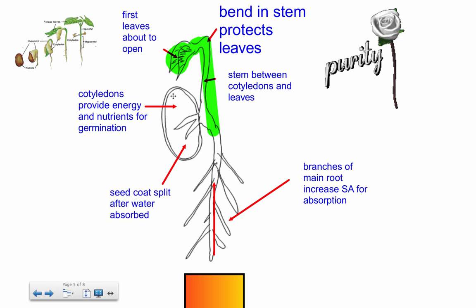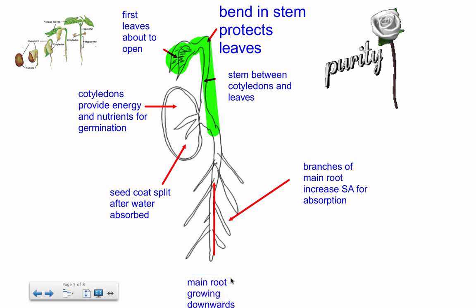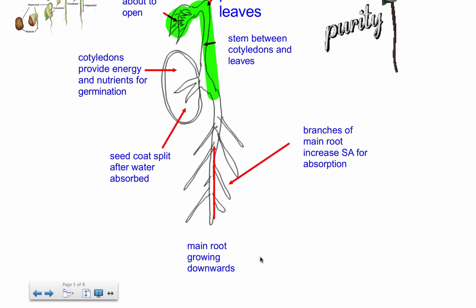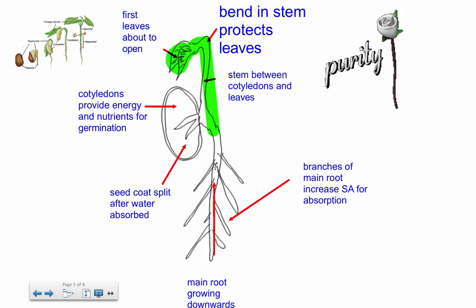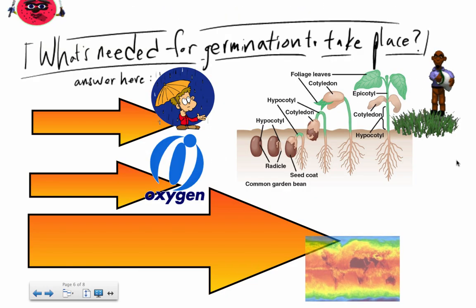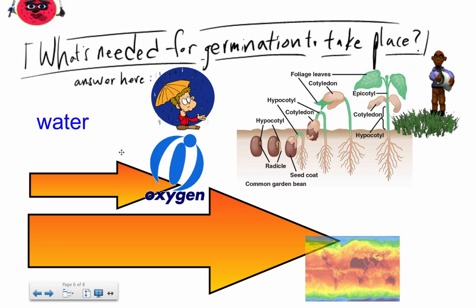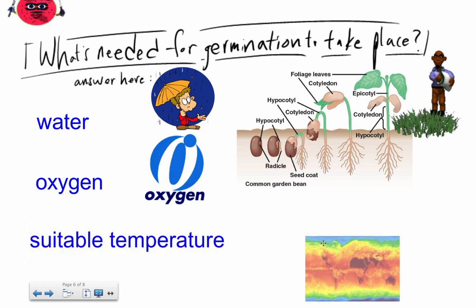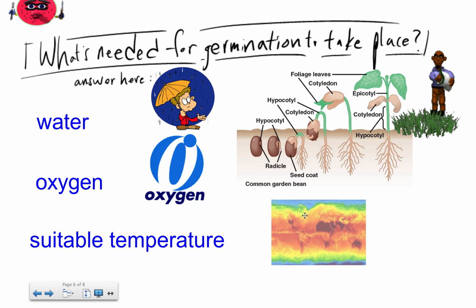The seed coat splits after water is absorbed. We're going to see the steps necessary for germination. The main root continues growing downwards - depending on the type of plant, a desert plant may spread roots shallowly over a wider area rather than going deep. So what is needed for germination? Water, oxygen, and suitable temperatures - these vary depending on the type of plant, with temperatures needed to activate enzymes.